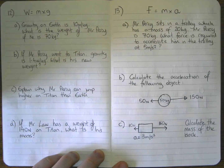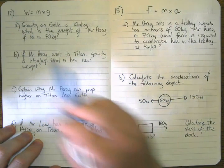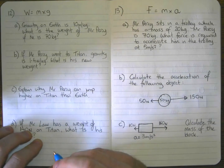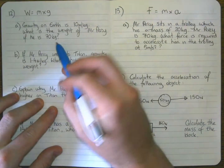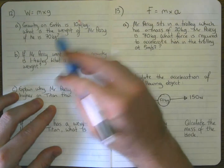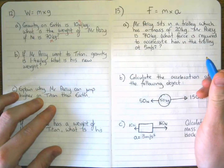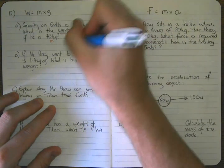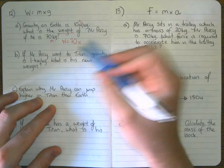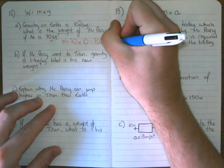Question 12. We've been given the equation: weight equals mass times gravity. Gravity on Earth is 10 Newtons per kilogram. What is the weight of Mr. Percy if he's 70 kilograms? Weight equals mass (70) multiplied by gravity (10), which gives us 700. The unit for weight is Newtons, because weight is a force.